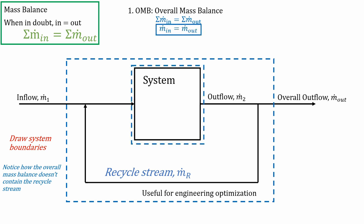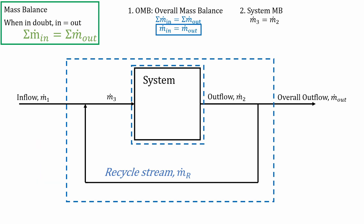And we can do the same thing for the system boundary on just the system itself. Again, it doesn't contain the recycle stream. So we're going to have to label ṁ_3 and ṁ_2 because these are going to be different. So the system mass balance is just going to be ṁ_3 equals ṁ_2. But now notice for the recycle stream, we have a junction coming in and a junction coming out. We can treat these as tiny little systems and do mass balance on these.